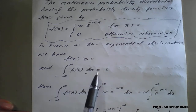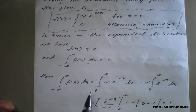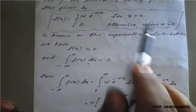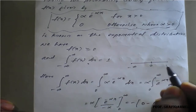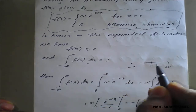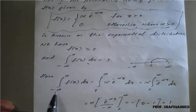Now I want to check whether the second condition holds. Taking the left-hand side — integration from minus infinity to plus infinity of f(x) dx. Since f(x) is only defined for x greater than 0, on the number line we only consider the positive part. So instead of minus infinity to plus infinity, the limits become 0 to infinity.